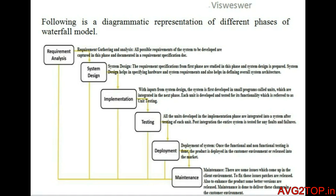The third one is implementation. With the help of the required information and the system design, small programs called units are developed. These units are developed and tested functionally by the employees of the organization — referred to as unit testing — where all the system designs are implemented into small programs to make the software. It is the initial step where the software is developed through coding and testing.